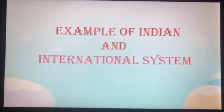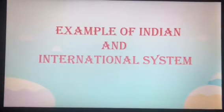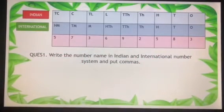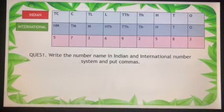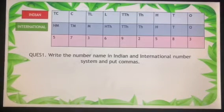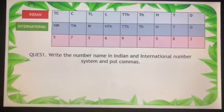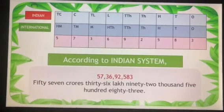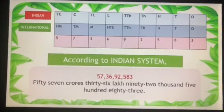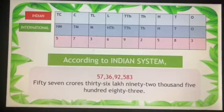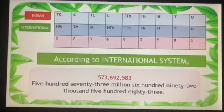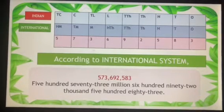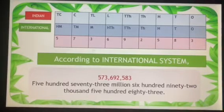Now we have an example of the Indian and international number system. In this question, we have to write the number name in both systems and put the commas. Starting with the Indian number system, the answer will be 57,36,92,583. And according to the international number system, the answer will be 573,692,583.